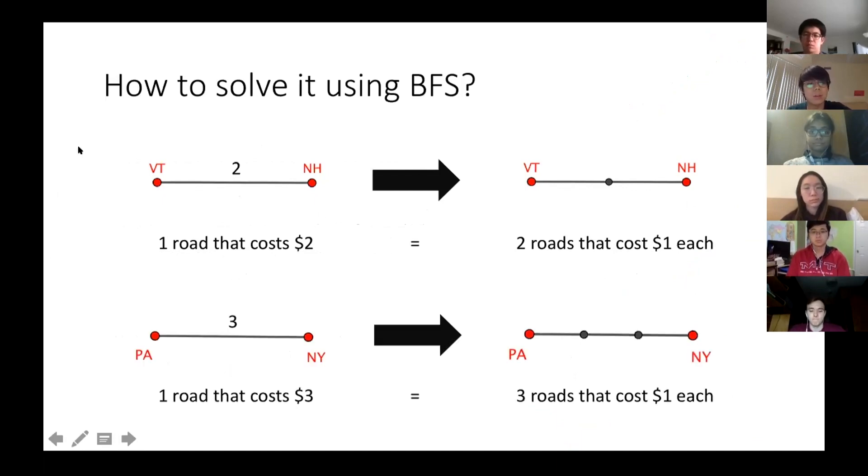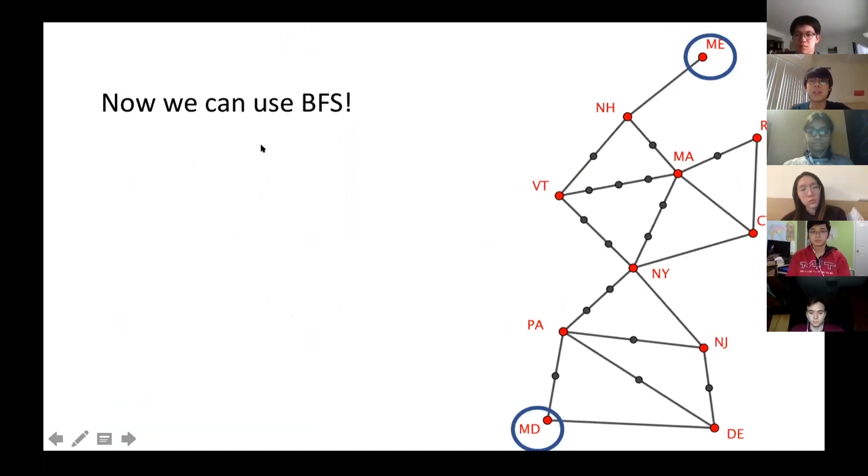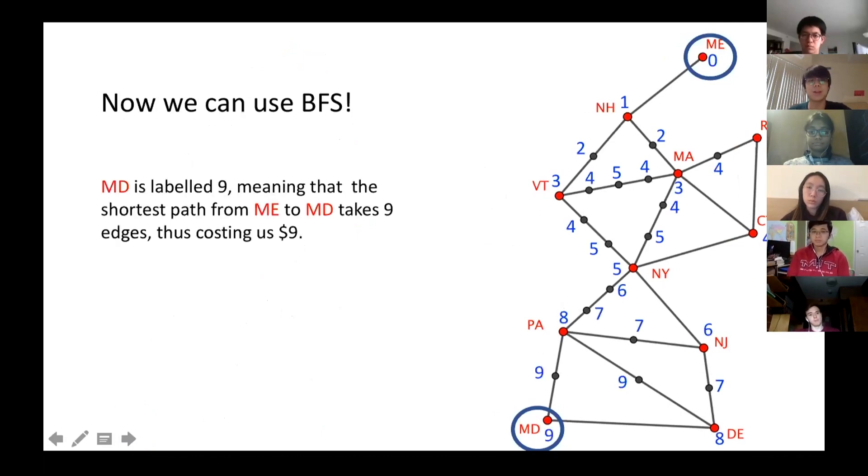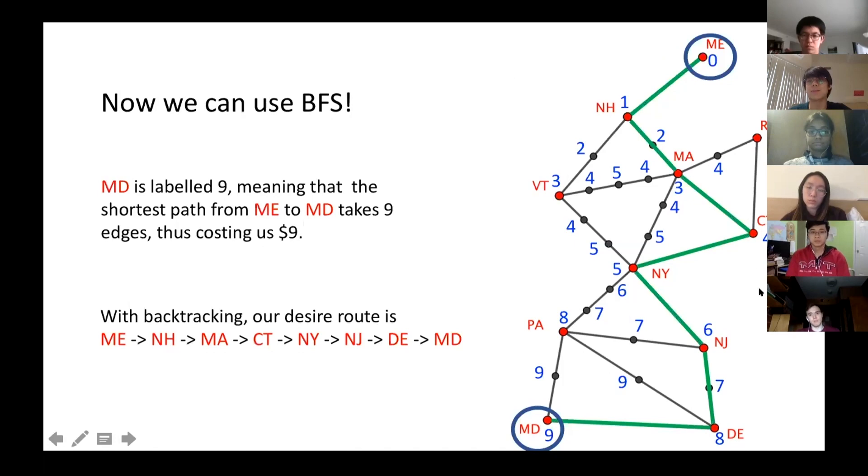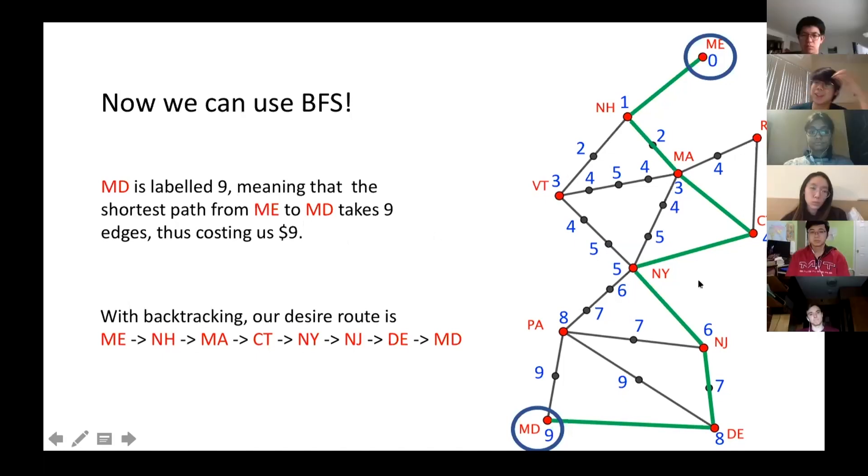You can transform the graph from the graph with the weights to the graph with intermediate nodes. As you can see, Massachusetts, Rhode Island, $2 will be split into two roads and you can do the same for every single edge. From here, you can use the BFS like we just did before. I'm going to just show you how it goes because it will take too long. You have zero, one, two, three, four, five, six, seven, eight, nine. You can do the backtracking to find the actual shortest path. Is it clear for everybody? Sounds good.